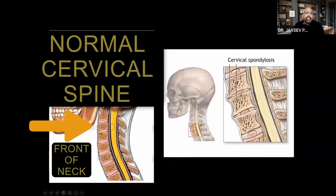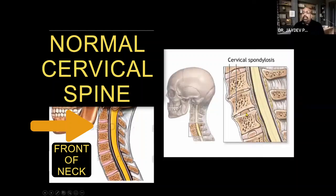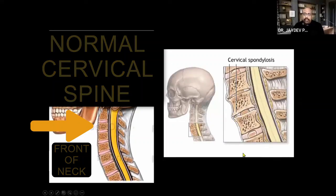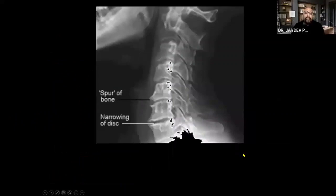On imaging, you can see a fairly normal disc height between vertebral bodies at one level, while at another level the disc height is reduced and new bone — osteophytes — are forming. These beak-like projections are the osteophytes seen on X-rays of patients with spondylosis.